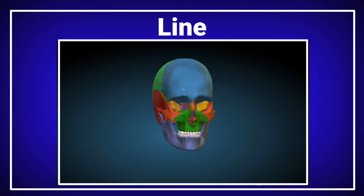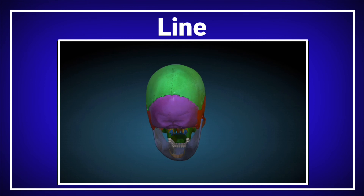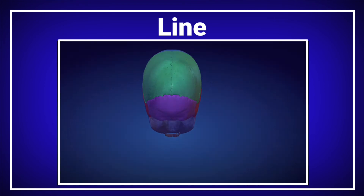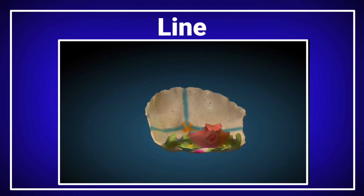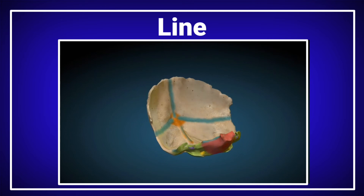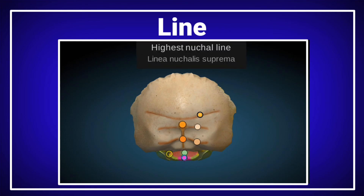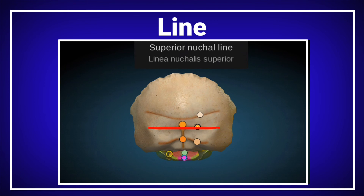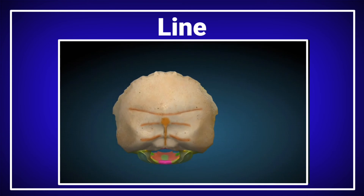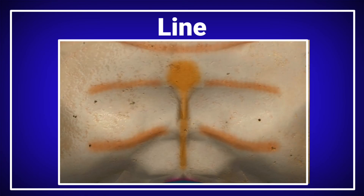This is a typical human skull. The occipital bone is found on the posterior part of the human skull. It has many linear elevations: the highest nuchal line located on the top, the superior nuchal line on the superior part, and the inferior nuchal line. The linear elevations on the occipital bone are called the nuchal lines.